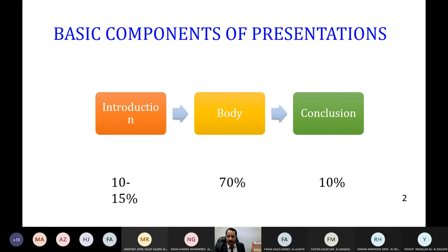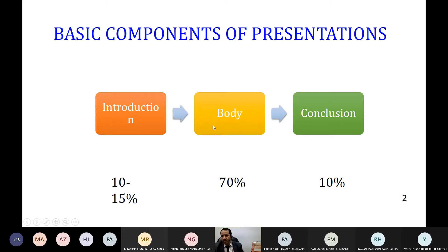The basic components of your presentation should be in this range: introduction 10 to 15 percent — try to reduce it, maybe 10 to 20 percent maximum. The body — your work — focus on your research methodology, experimental setup, results, discussion, and analysis: 70 percent. And the conclusion: 10 percent. As you can see, more focus is on your work.